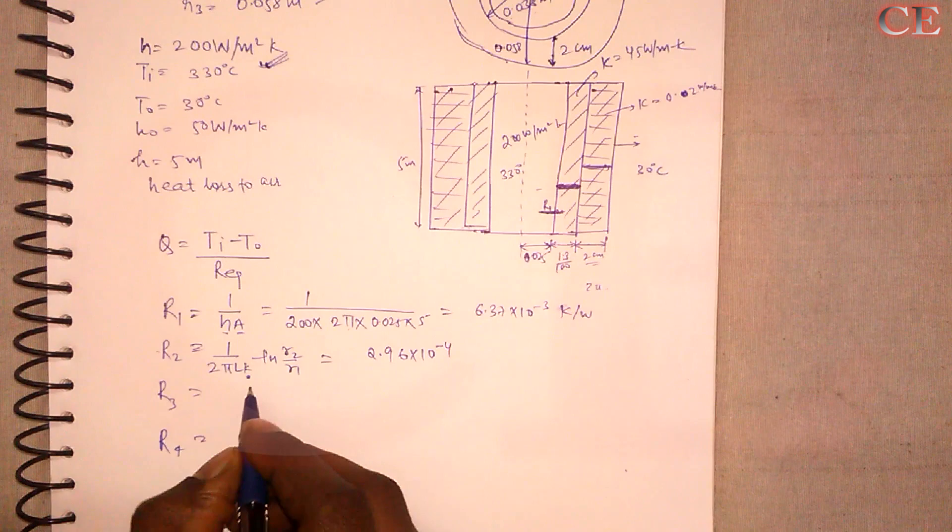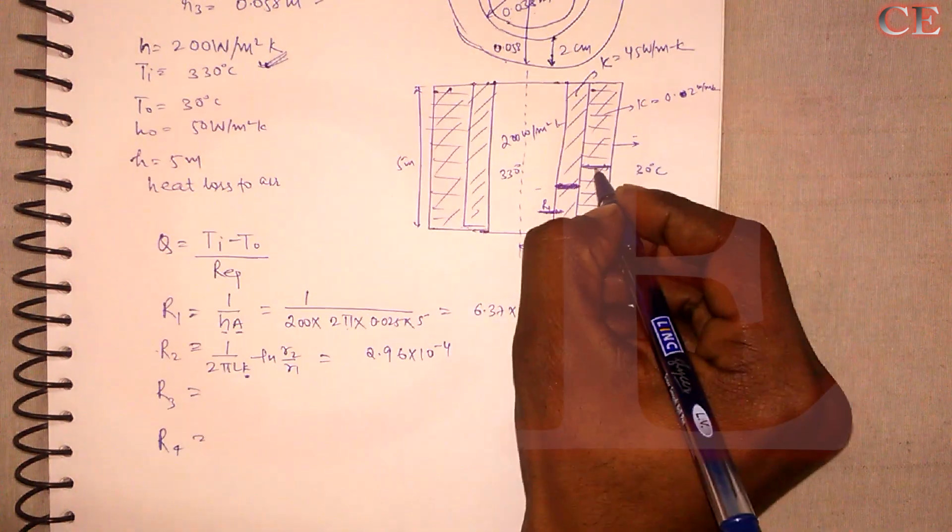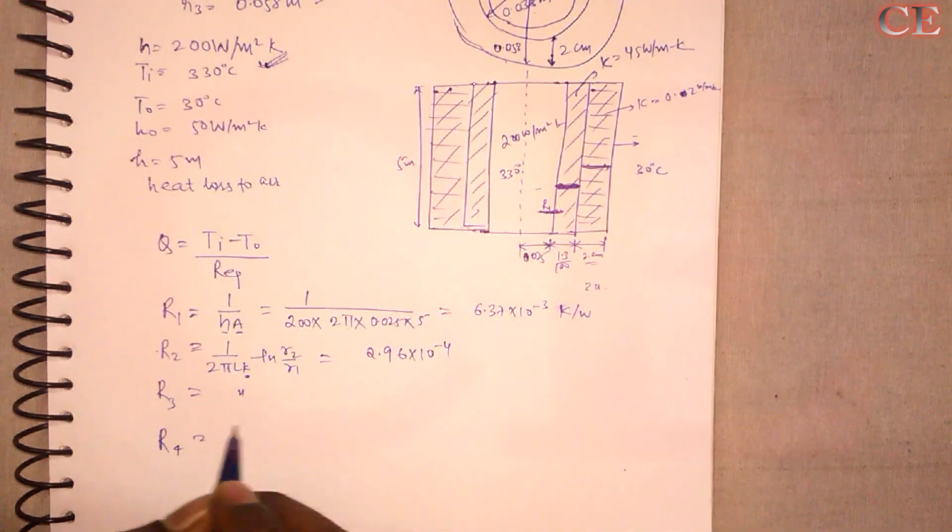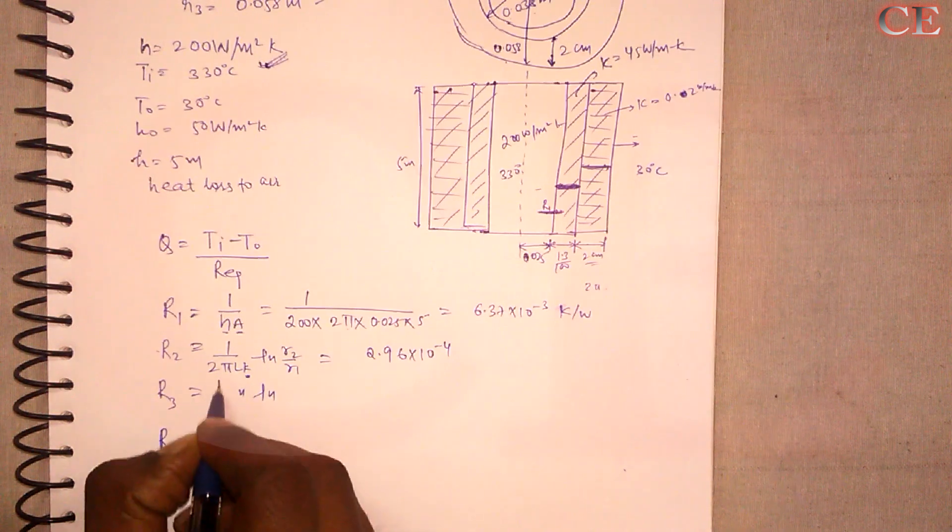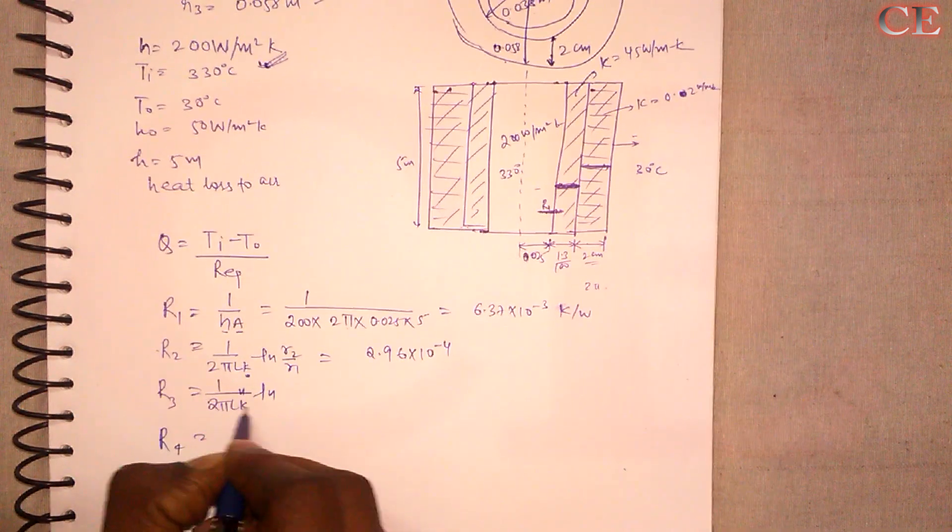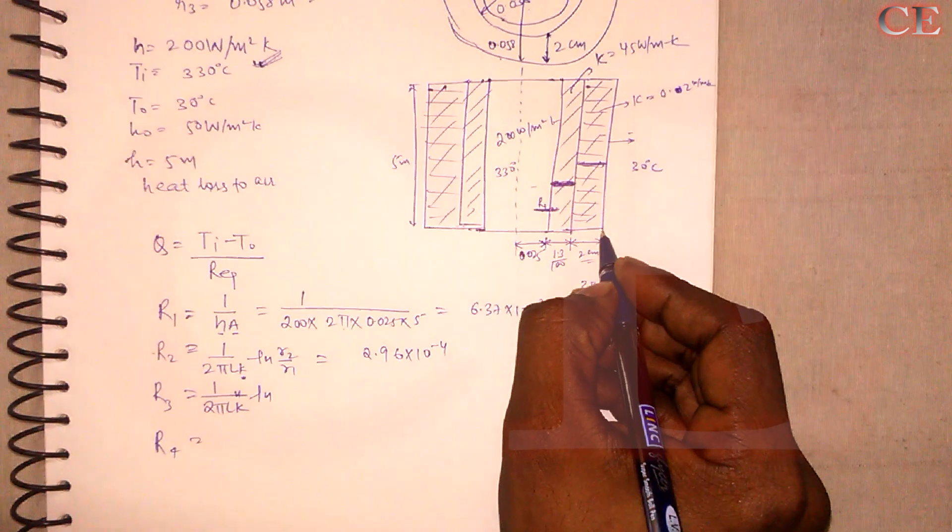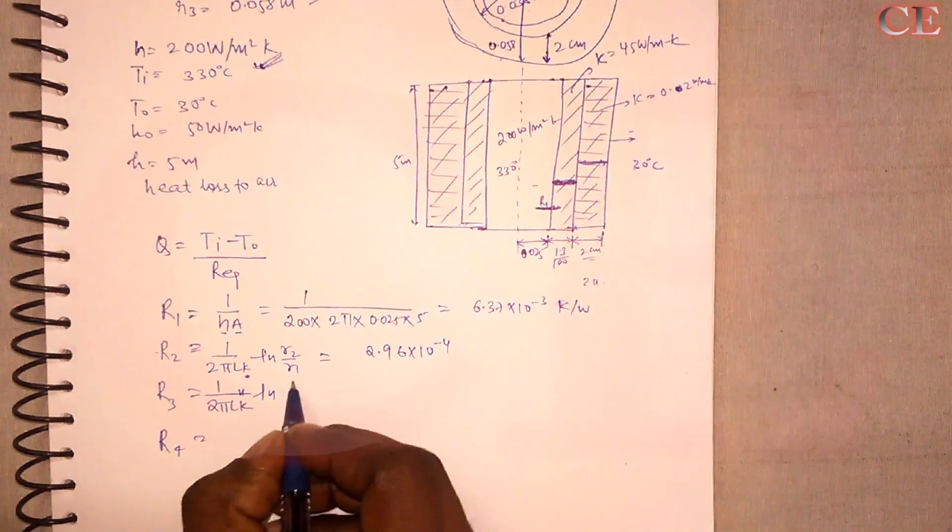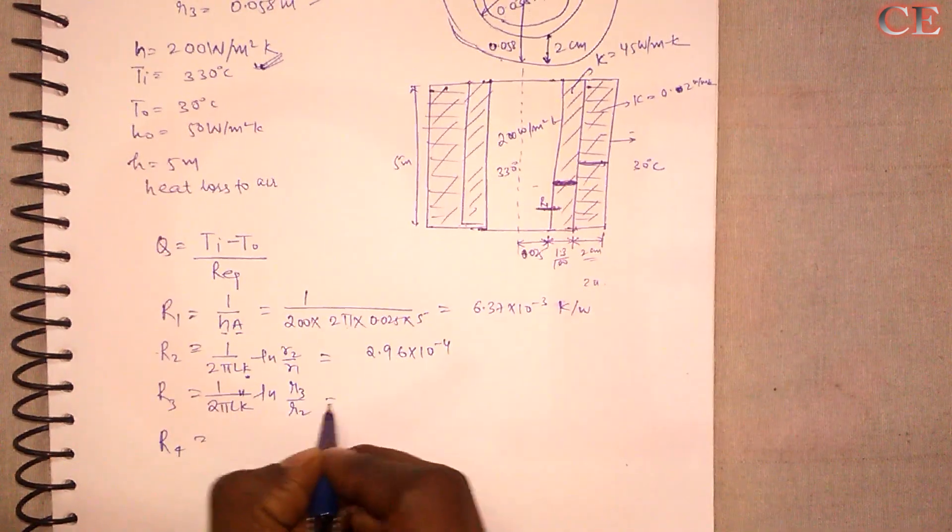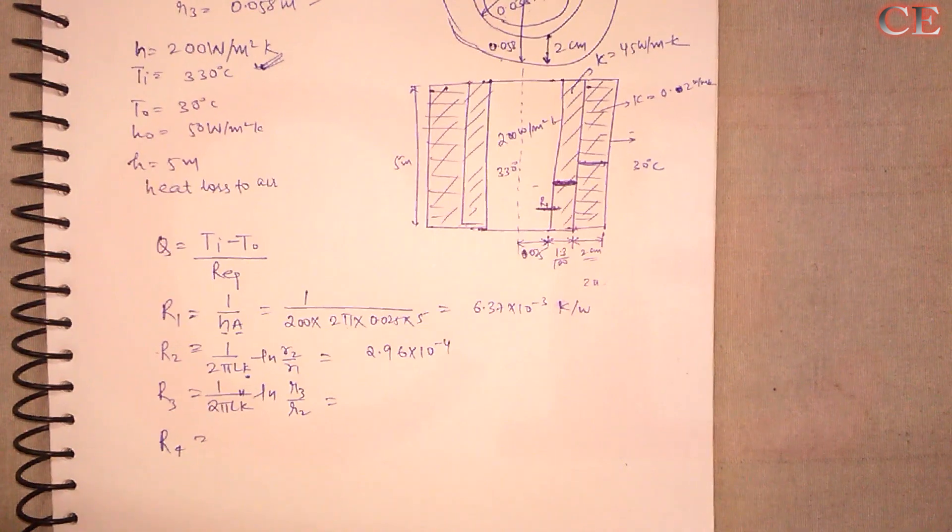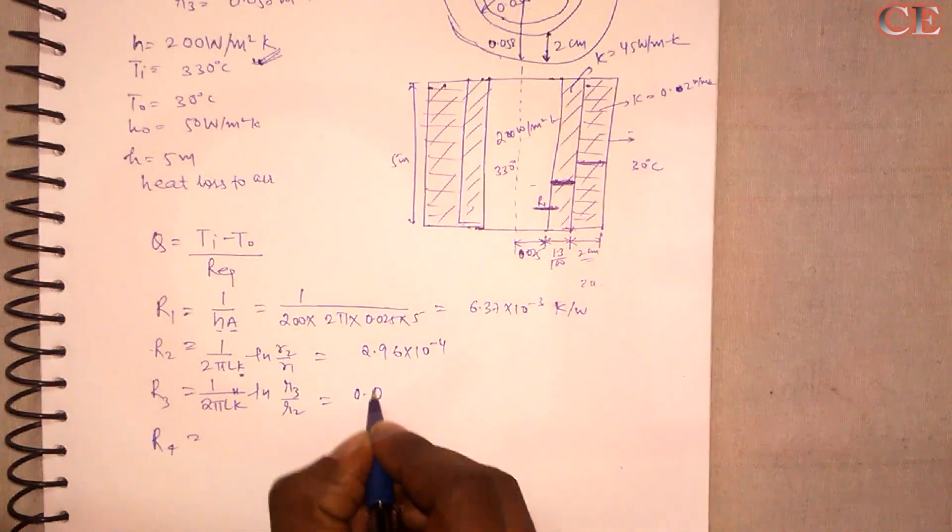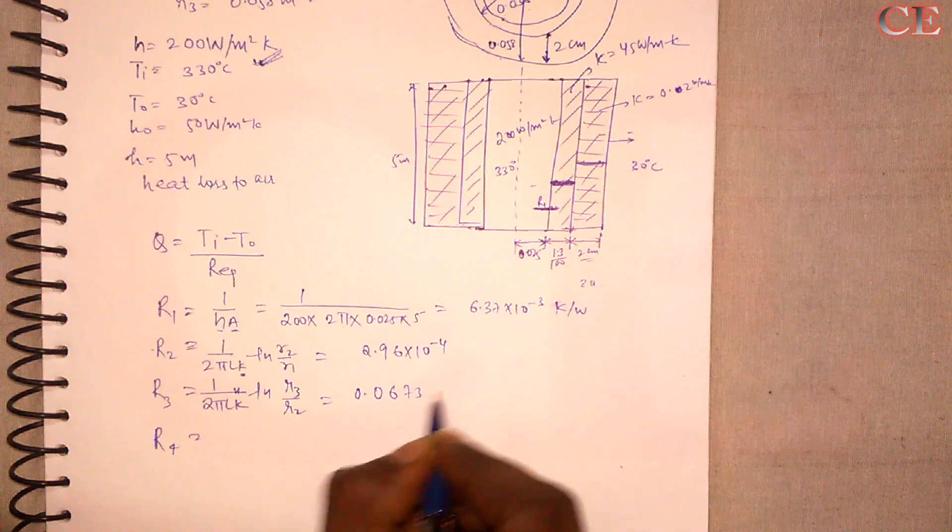Now we need to find out the value of R3. So R3 upon, R3 upon, R3 upon. So R3 upon R2. So after solving this we will obtain 0.0673.